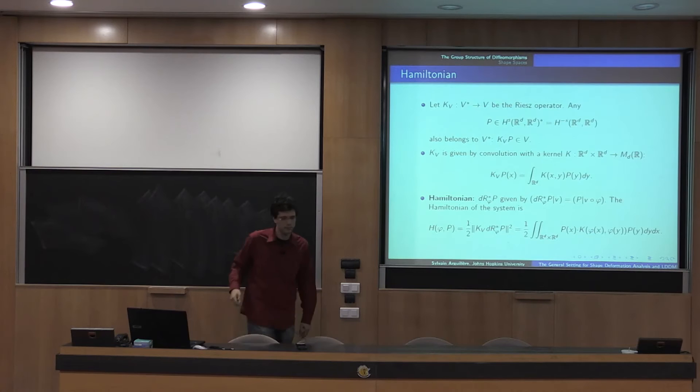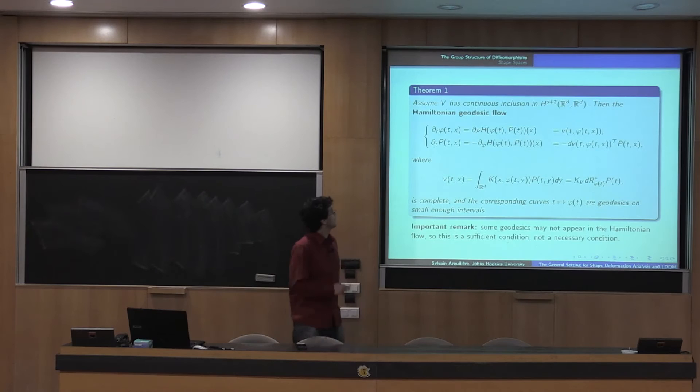So here P is in the dual of HS. But since you're at phi, you have to actually pull it back by the right composition by phi. And so you get the following formula, which is actually kind of nice as long as you know the kernel, of course. And now what we can see, so this is actually, I forgot to say it, it's a theorem proven by me and Emmanuel Trella from Jussieu. So if we assume that the vector fields in V are smoother than the minimal smoothness, more precisely like two orders more than the minimum, then the Hamiltonian geodesic flow is well defined. It's also complete, so it exists for all time, and the corresponding curves, so the projection to the space of diffeomorphisms are geodesics on small enough intervals. However, as I said, this may not, we may not capture all of the shortest paths in this kind of structure because we are in a sub-Riemannian setting.